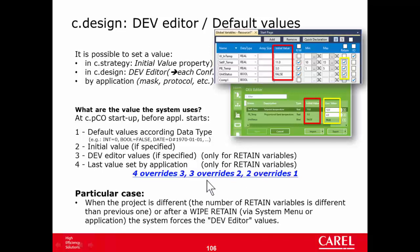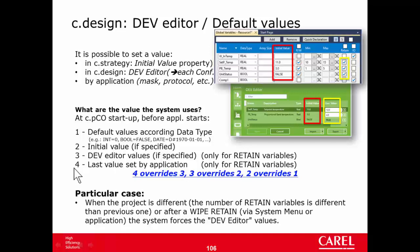Let's look at some typical use cases. The first could be Compressor 1, which has no initial value and is not retained. At startup, Compressor 1 takes the value false, since it is boolean. The initial value is not specified, so it remains false. The DEV value does not apply because this is not retained, so it remains false. The last value set by application also only applies to retained variables, so it remains false.